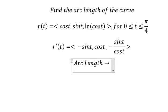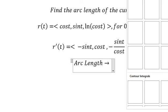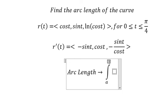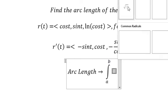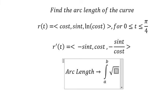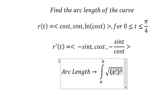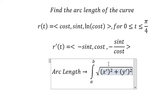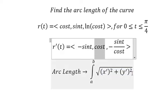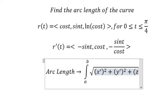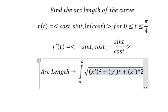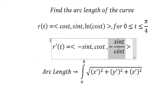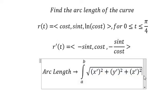The arc length formula is the integral from a to b of the square root of: the first derivative of x squared, plus the first derivative of y squared, plus the first derivative of z squared, all times dt.